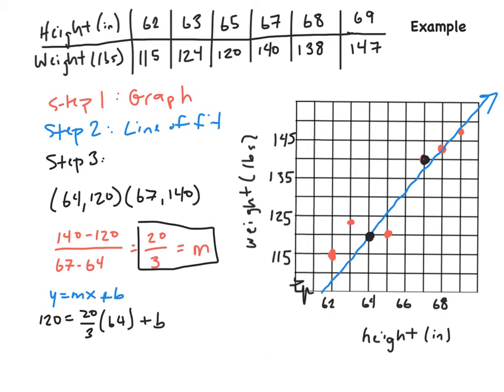So, by doing that, all that I have to do is solve for b. b is going to be my y-intercept where it crosses. So once I solve this through, 20 times 64 divided by 3 is equal to about 426 and a third plus b. 120 to get b by itself, I'm going to have to subtract 426. So 120 minus 426 is b is equal to negative 306.